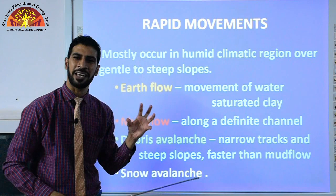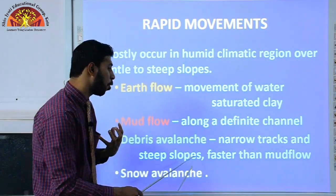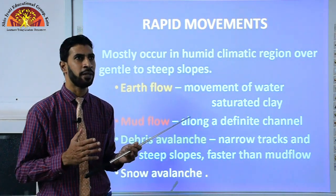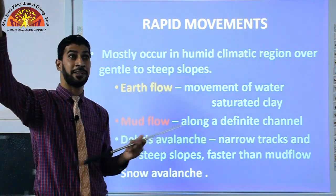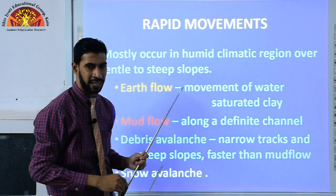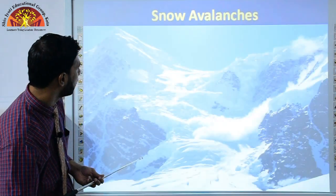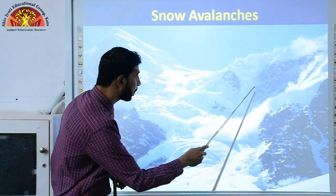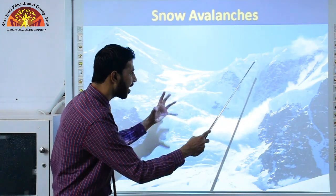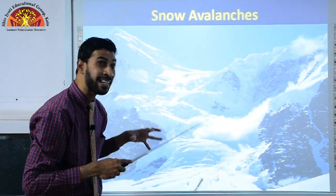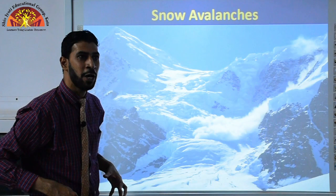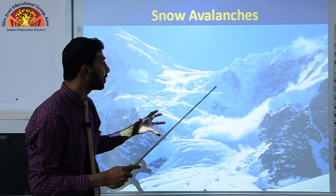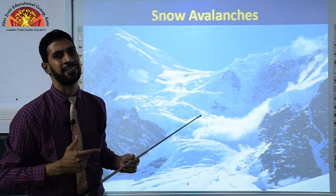Debris avalanche occurs along narrow tracks on steep slopes and is faster than mud flow. Snow avalanche is when snow in snow-covered areas breaks off and comes down all at once very rapidly — it is very dangerous. Within a fraction of seconds it can happen, which makes it extremely hazardous.